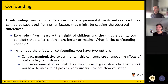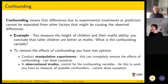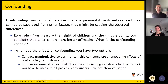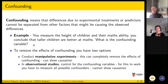Confounding means that differences we think might be due to experimental treatments or predictors can't be separated from other things that might be causing those observed differences. Here is an example — I want you to play along. You go to a school, you measure the height of a bunch of children and give them a simple maths test. You find that taller children are better at maths. This is actually what would happen. What is the confounding variable?